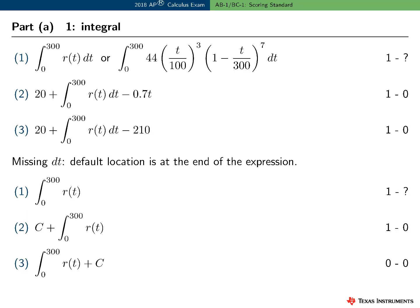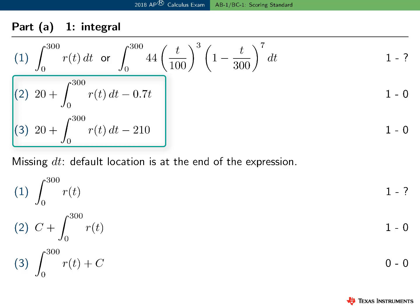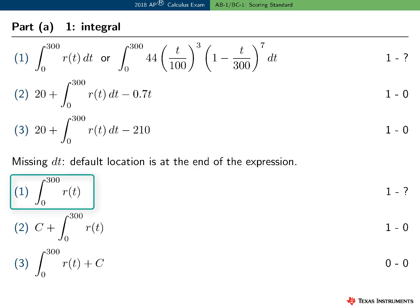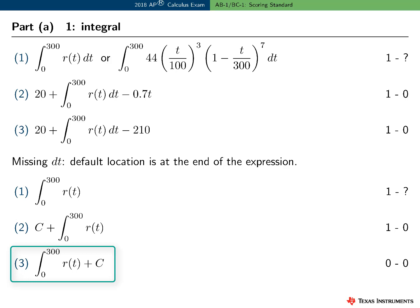Here are some interpretations of the scoring guidelines. The first point in Part A was for the definite integral. The student can use the named function R or write out the full expression for R(t), though they risk making an error writing the entire expression. Two additional examples show students who presented the correct integral as part of an incorrect expression — they earn the integral point but cannot earn the answer point. If the differential dt was missing, the work was interpreted as if dt appeared at the end of the expression. In the first example the student earns the integral point; in the second, any number plus the integral missing dt earns the first point; in the third, placing dt at the end leads to an incorrect integral, earning zero, zero.